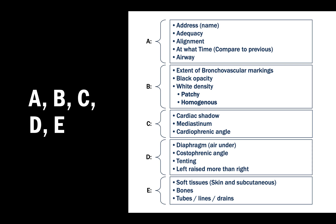B means Breathing - have a look at the extent of bronchovascular markings and whether they are reaching the thoracic cage or not. Look for any translucent or black areas void of bronchovascular markings. Look for white density - density can be homogeneous or patchy, and each means something different.